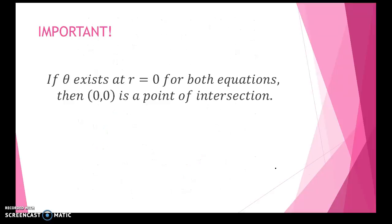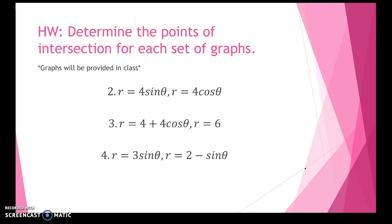So to add it to your notes, if theta exists at r equals 0 for both equations, then 0, 0 is a point of intersection. And lastly, for homework, take these three functions. These are the three graphs we're going to look at in class and you'll be given instructions of the overlap of the two regions. But determine the points of intersection, we'll check those first, and then we'll be able to determine the area. Graphs will be provided in class. So attempt to do it by setting the functions equal to 0 and then checking the pole.